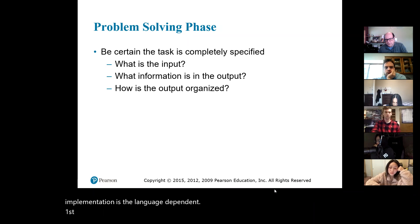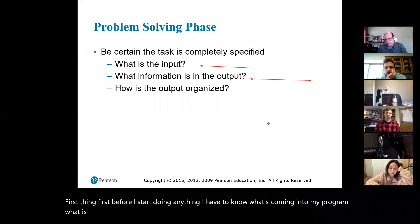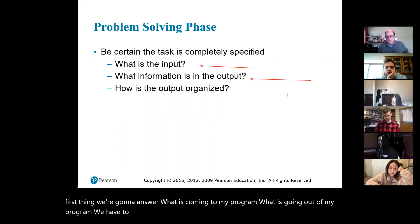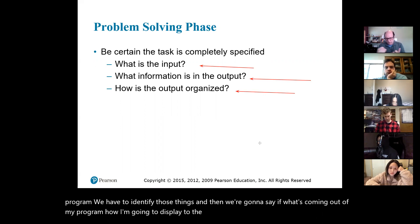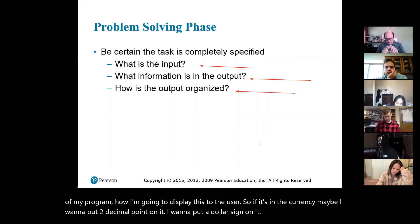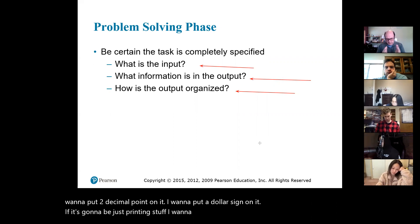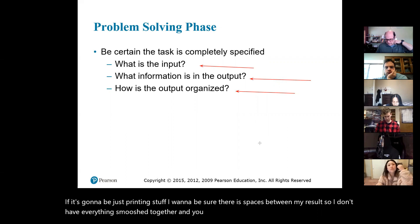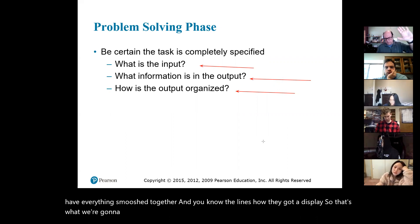Before I start doing anything, I have to know what's coming into my program and what is coming out of my program. When we start doing our design document, that's the first thing we ask: what is coming into my program, what is going out? We have to identify those things. Then we think about how to display the output to the user — if it's currency, maybe I want two decimal points and a dollar sign. If it's just printing, I want spaces between results so nothing is smooshed together. So we think about the input and the output. We'll go over the design document next week.